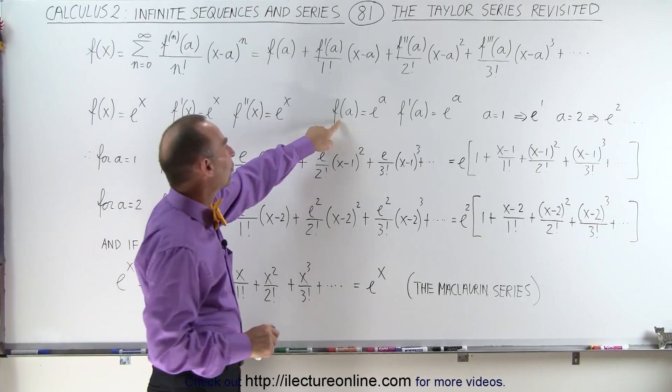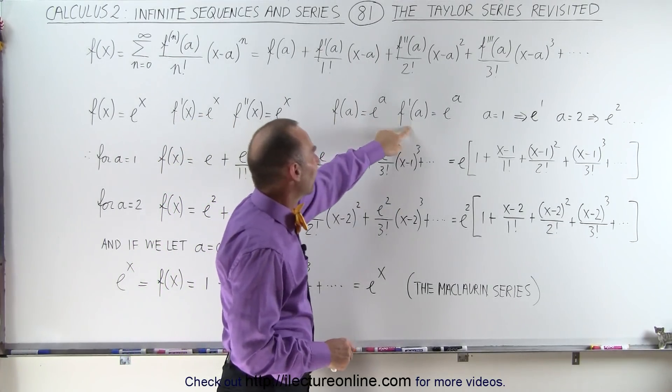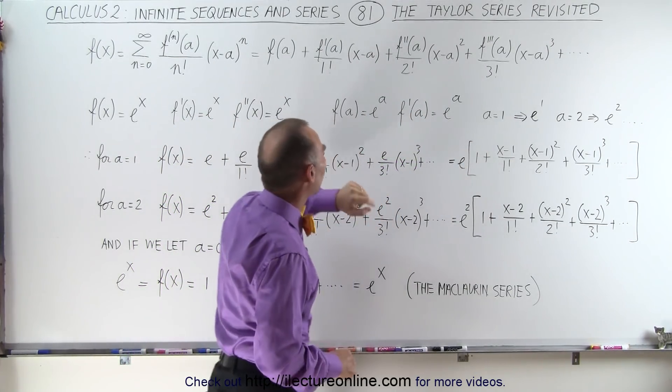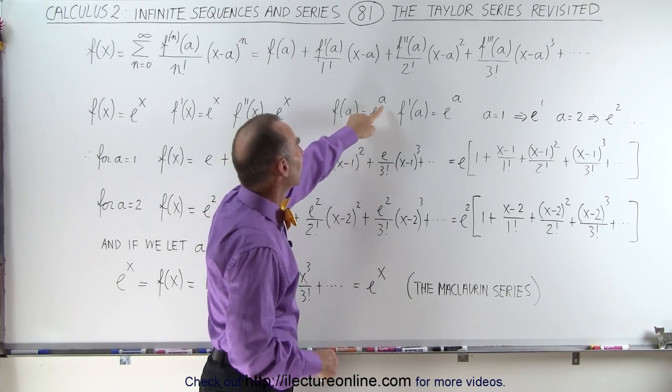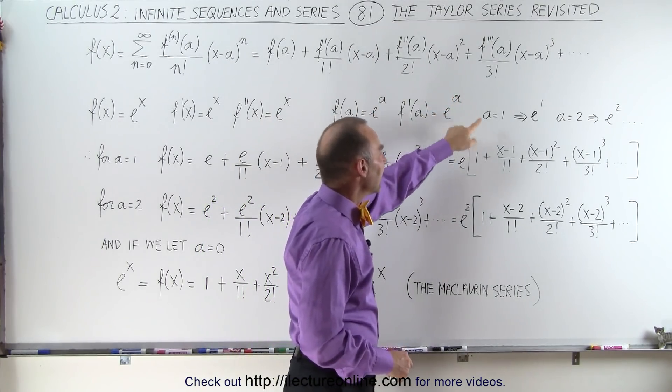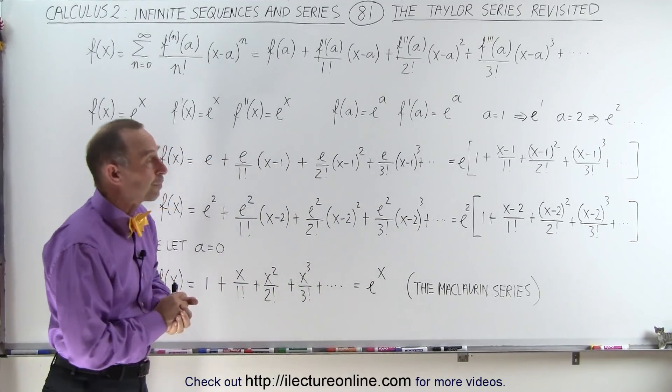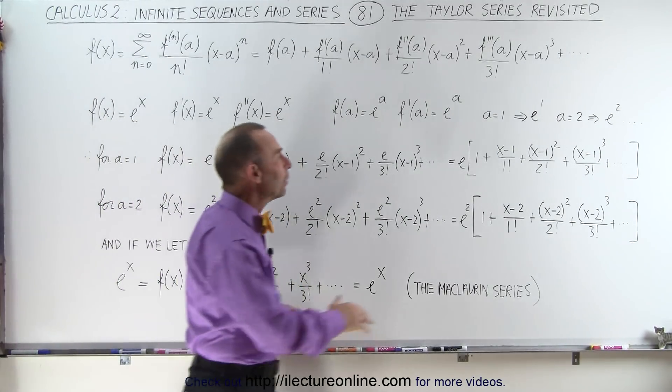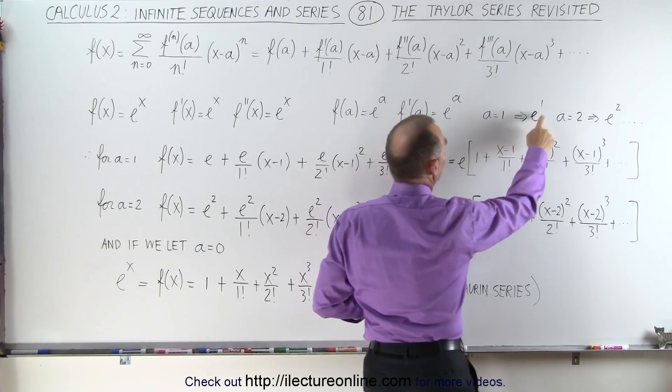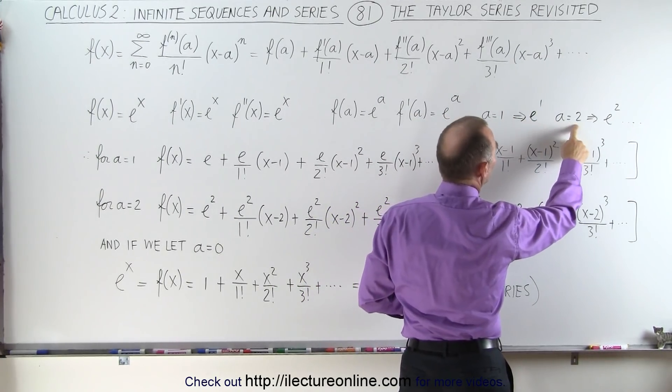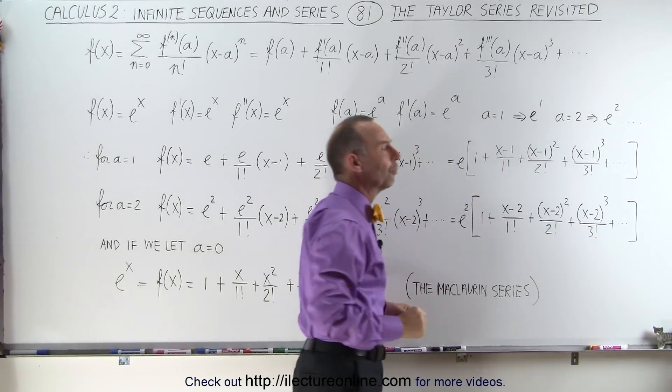And then, if we evaluate those functions—the function, the derivative, first derivative, second derivative, and so forth—you can see that we have e^a, e^a, e^a, and so forth, since the derivative is equal to the original function. Now, if we let a = 1, then we get e to the first power, and when a = 2, we get e to the second power, and so forth.